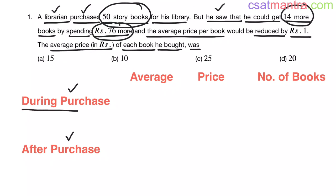Now, we will go through during purchase case. A librarian purchased 50 story books for his library. We don't know the average, so I am assuming the average as X. Price also we don't know. Total price of 50 books, we don't know. Let's assume the price as P. Number of books, 50. This is clear, right?